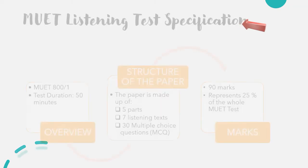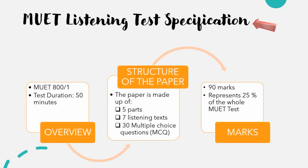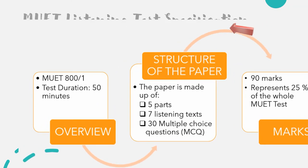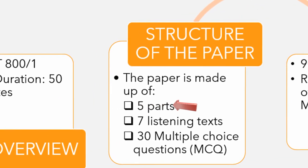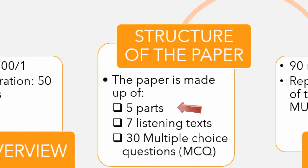Let's now move on to the MUED listening test specification. This is an overview of the test. The MUED paper is made up of four papers: the listening, speaking, reading, and writing papers. The MUED listening paper is Paper 1 of the MUED test, and the duration of the test is 50 minutes. This is the structure of the listening paper.